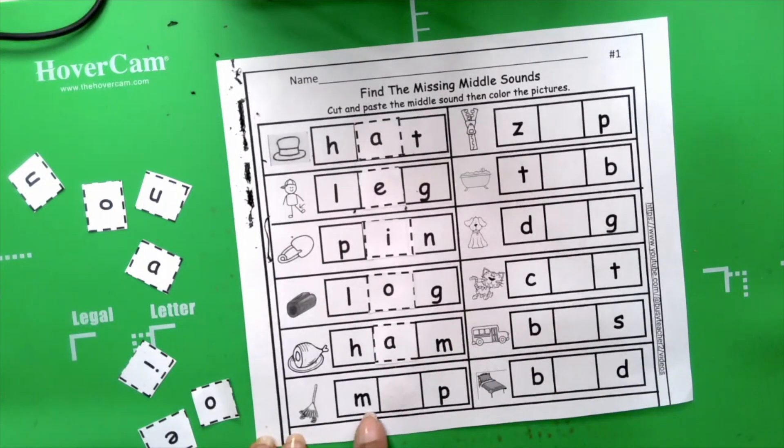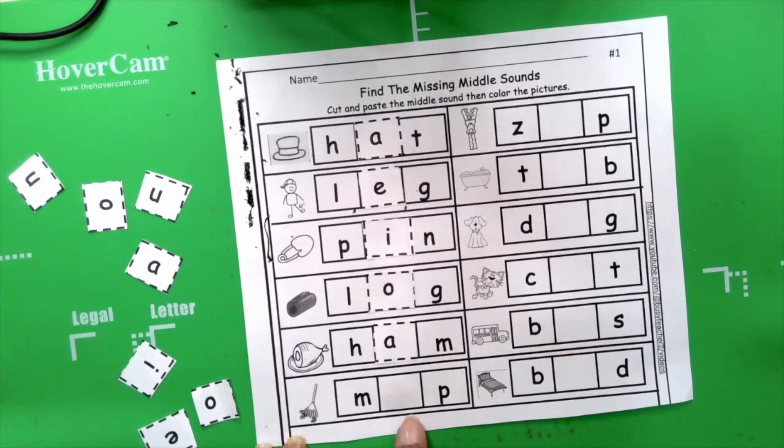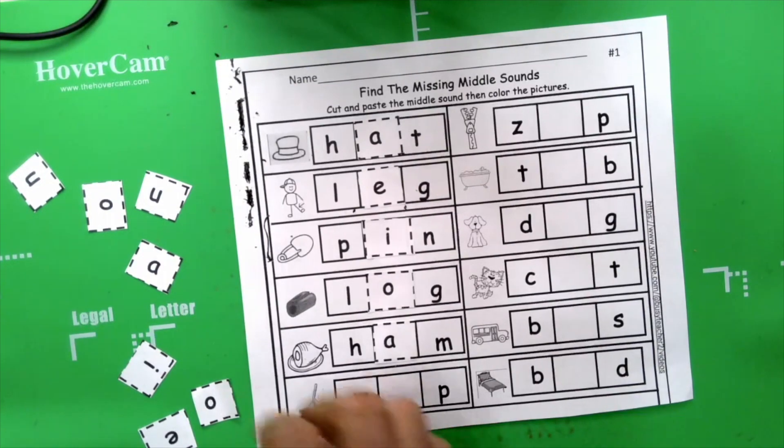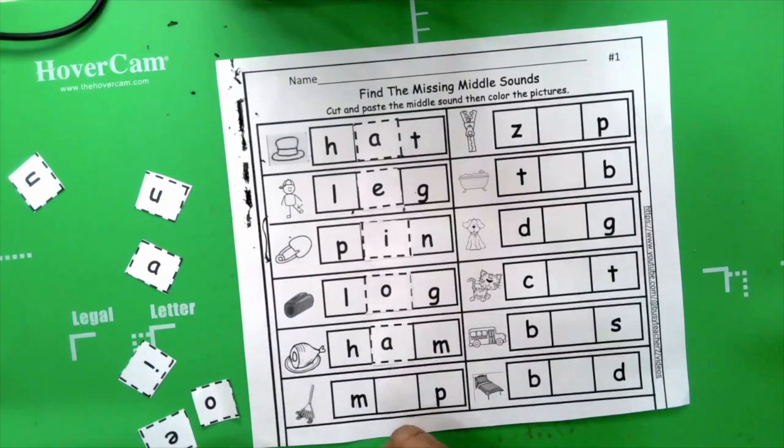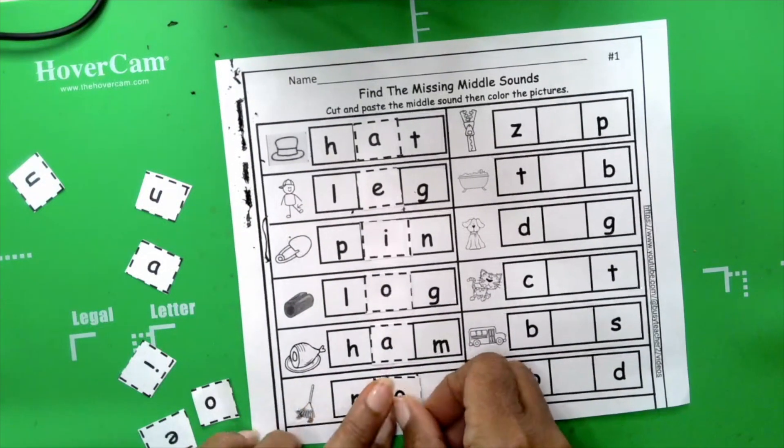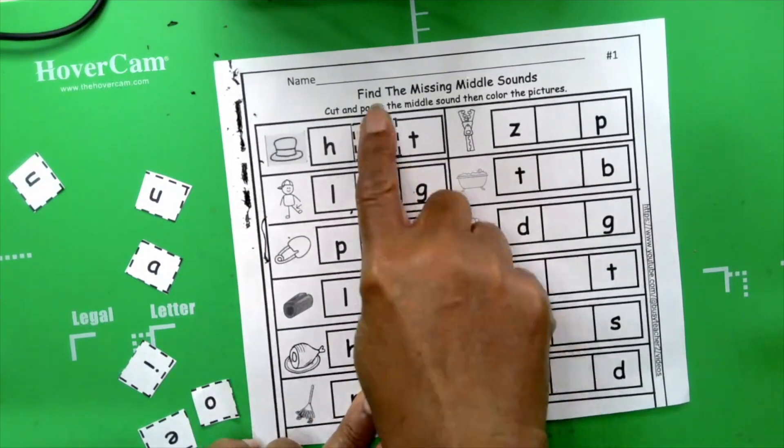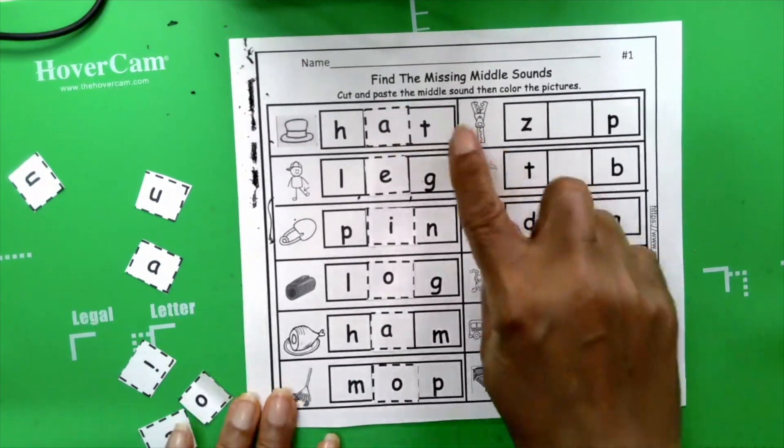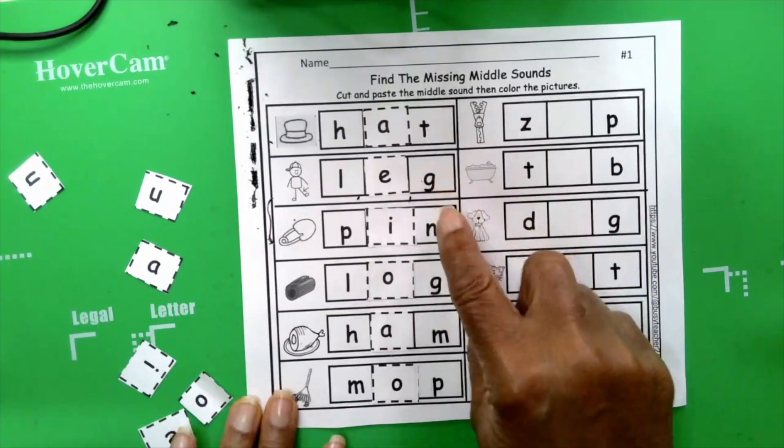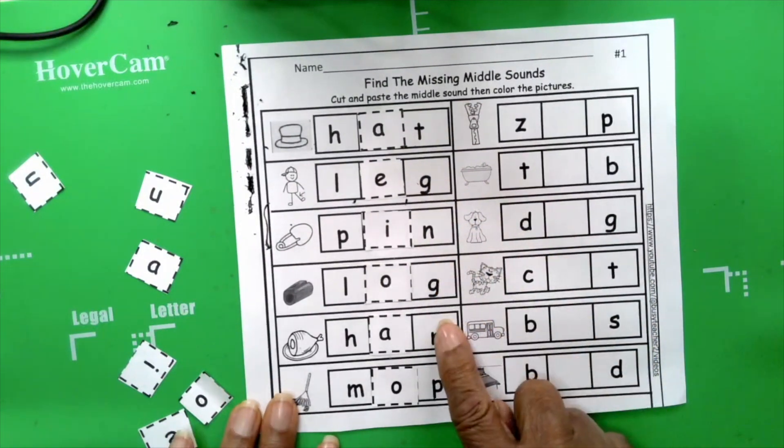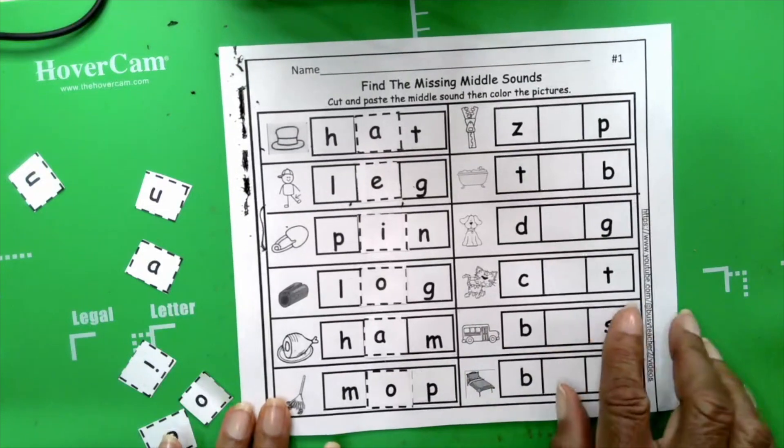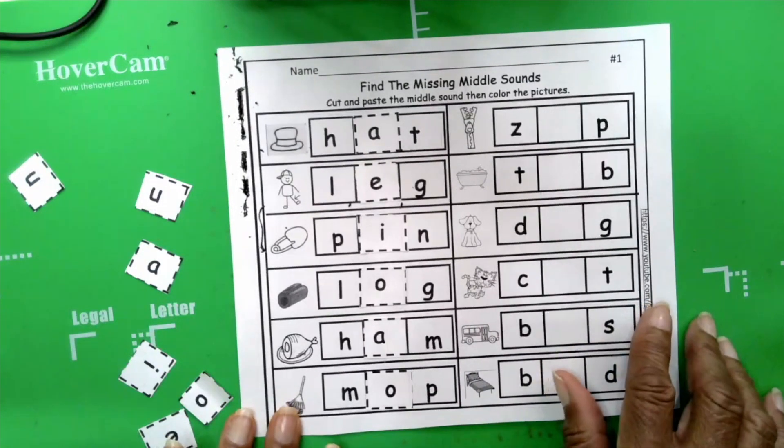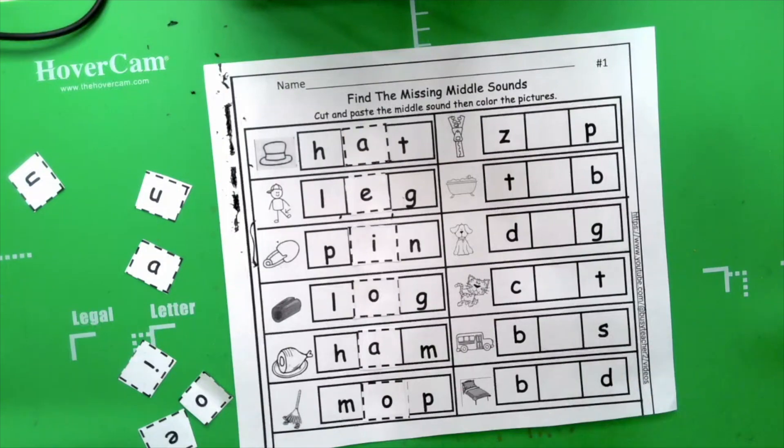Mop. M. Ah. P. Mop. Ah. What sound did we say makes that? What letter did we say makes the sound ah? You're right. Oh. Oh. Very good. We finished our first row. Let's say the words boys and girls. Hat. Leg. Pen. Log. Ham. Mop. Very good boys and girls. We're building our vocabulary.